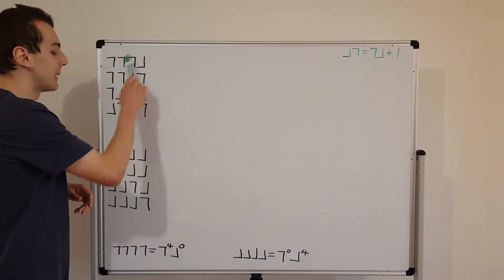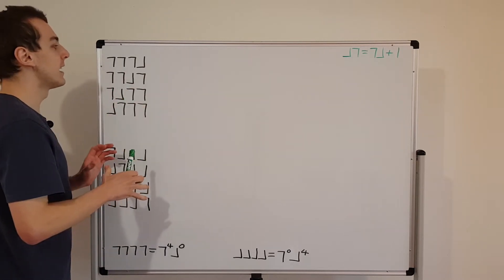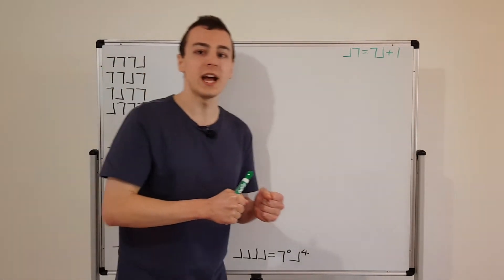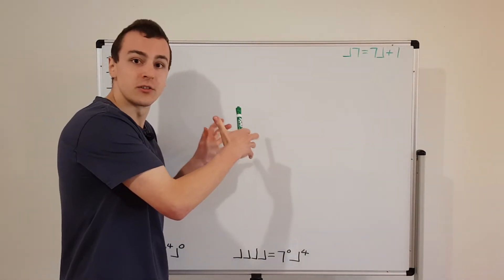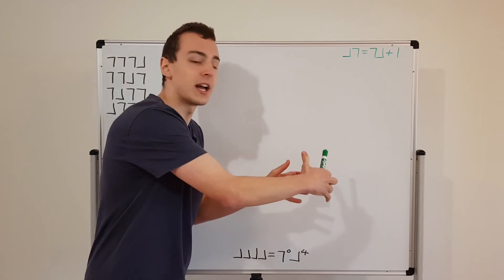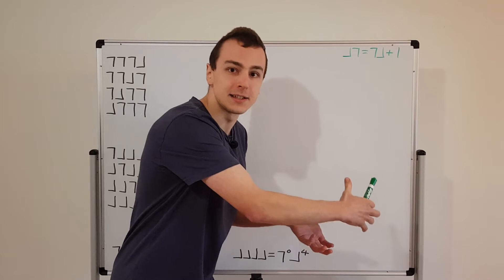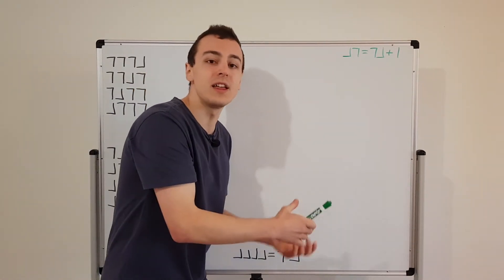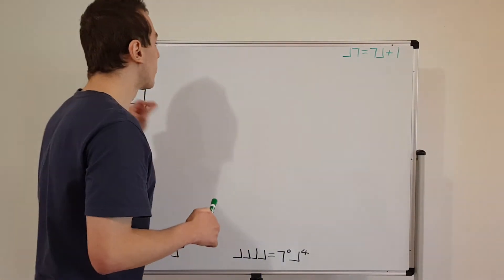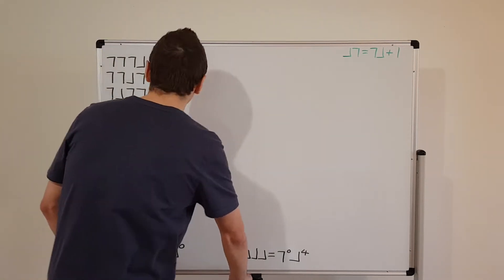Now let's look at how we can manipulate these terms. The form I want to put them in is similar to the number operator, where we have all of the raising operators first, followed by the lowering operators. The lowering operators act first on a state, and then the raising operators act after. That is the standard order we want.